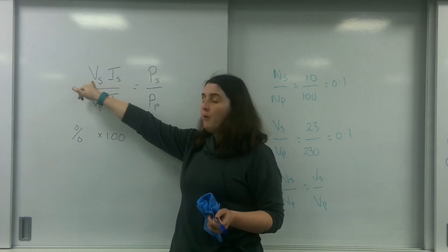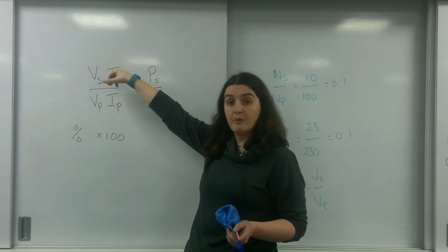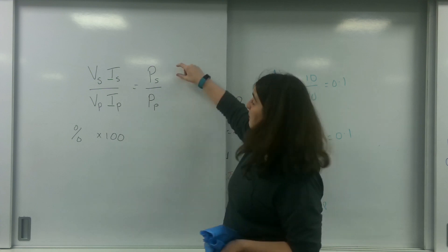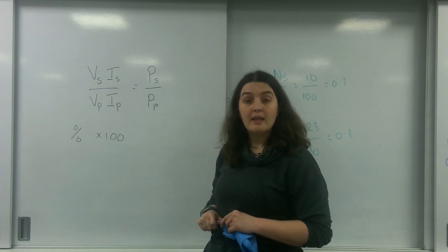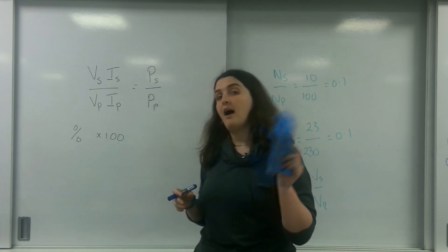I'm going to take my output, which is my voltage on my secondary and my current on my secondary, and divide by my input on my primary. In essence, I'm taking my power at my secondary and power over my primary. And to get the percentage, I just take that ratio and times it by 100.